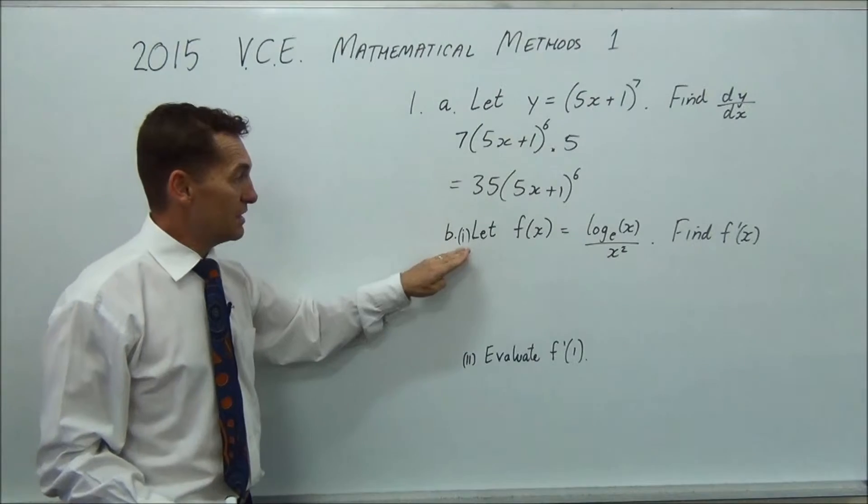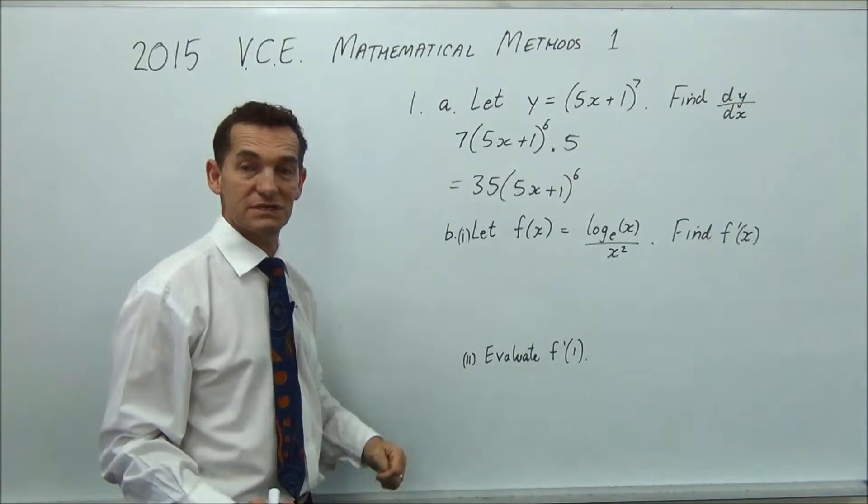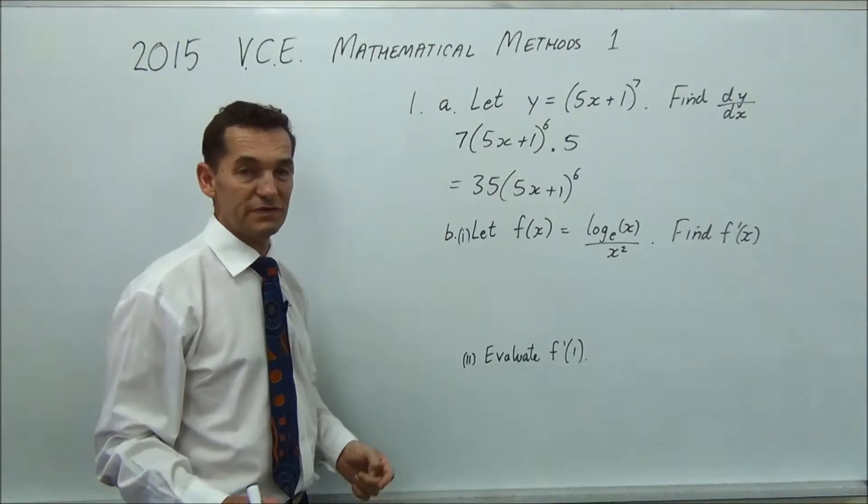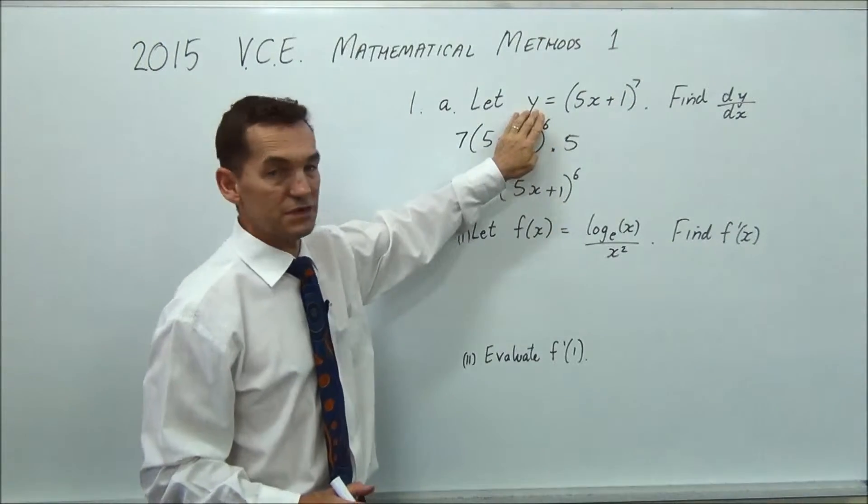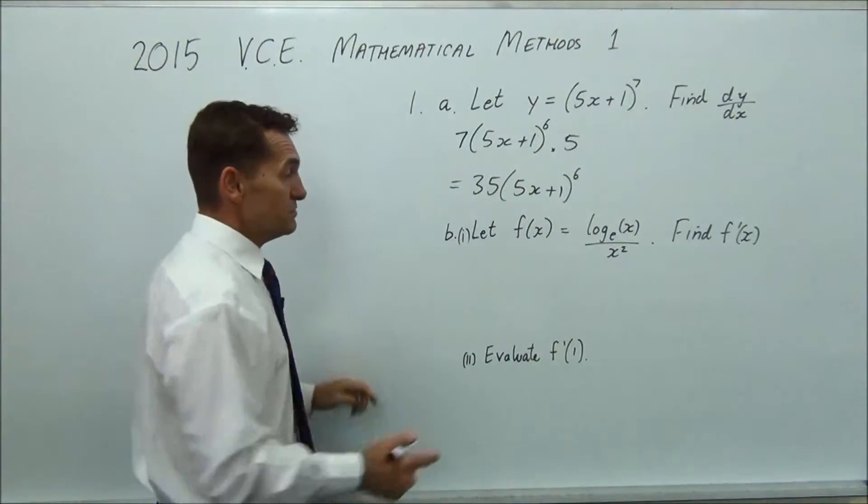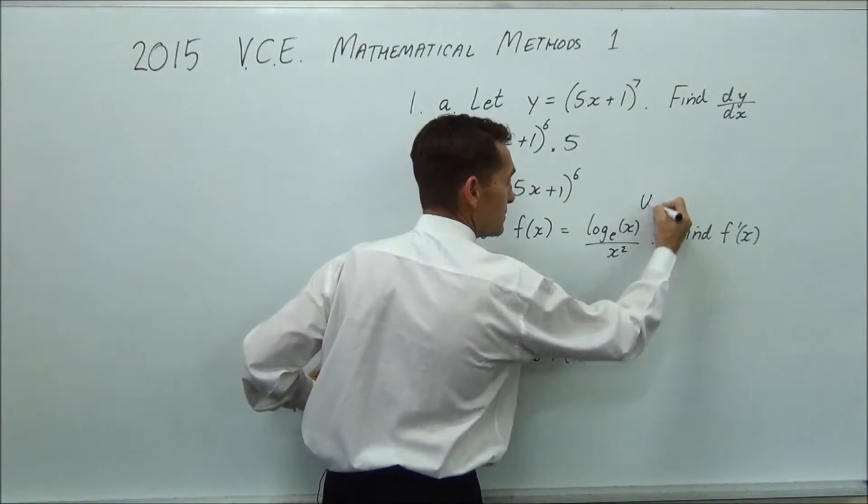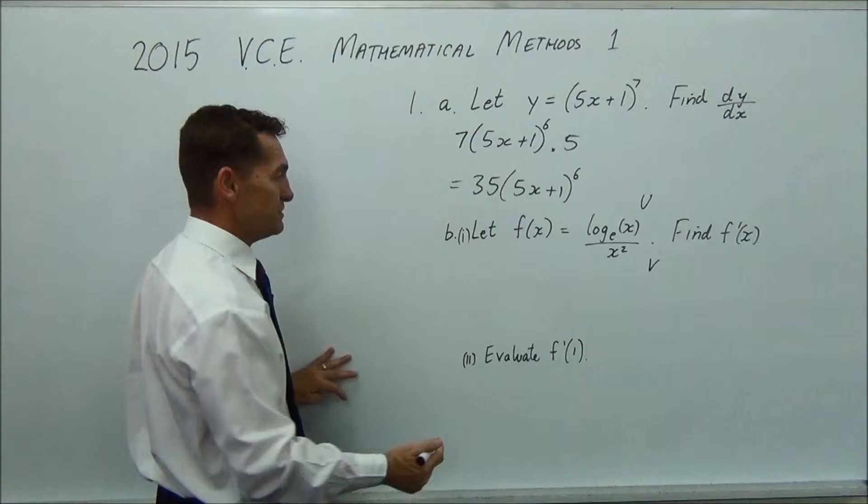Second one, let f(x) equals log e to the x over x squared, find f'(x). So again you're differentiating. We've just used f(x) instead of y but it's the same thing. This time you're going to use the quotient rule, so you're going to make that u, you're going to make that v, you're going to do v du minus u dv over v squared.